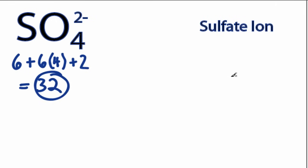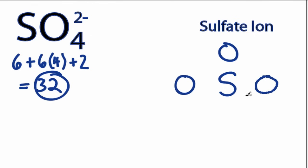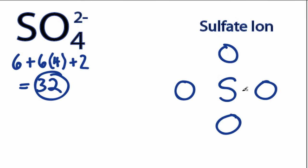We'll put the sulfur in the center, and then the 4 oxygens will go on the outside. Next, we'll draw bonds between the sulfur and the oxygens. There we have 4 bonds, and we've used 8 valence electrons.